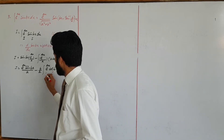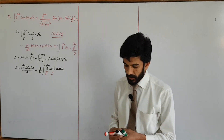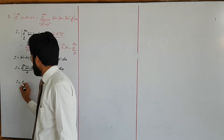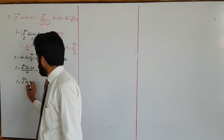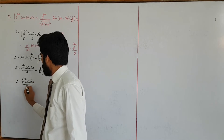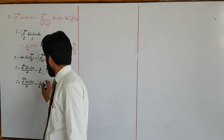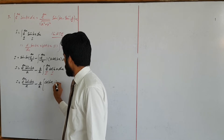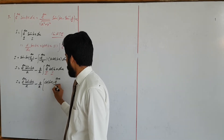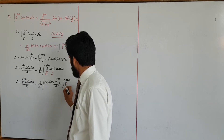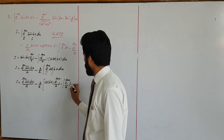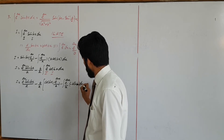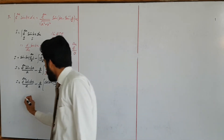Again trick: trigonometric function first है और exponential function second है। Again integrating by parts apply करेंगे: I = e to the power ax sin vx upon a, minus b over a, into: cos vx into e to the power ax upon a, minus integral of e to the power ax upon a into minus b sin vx dx।